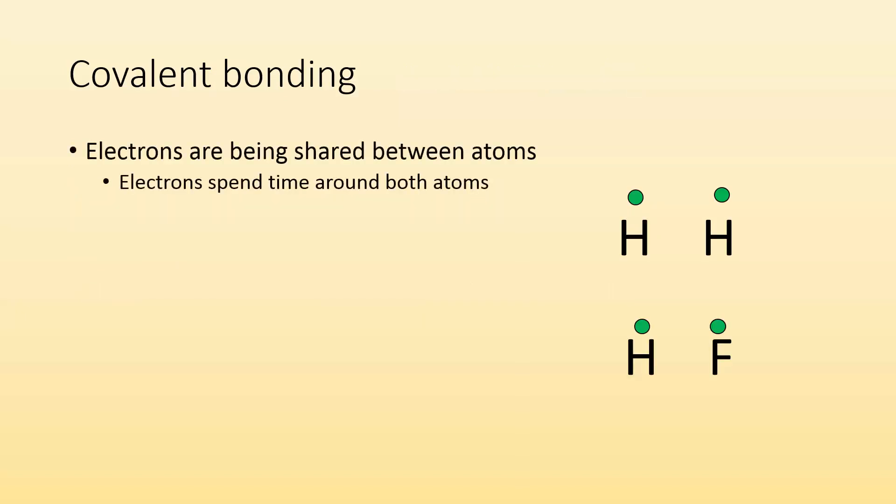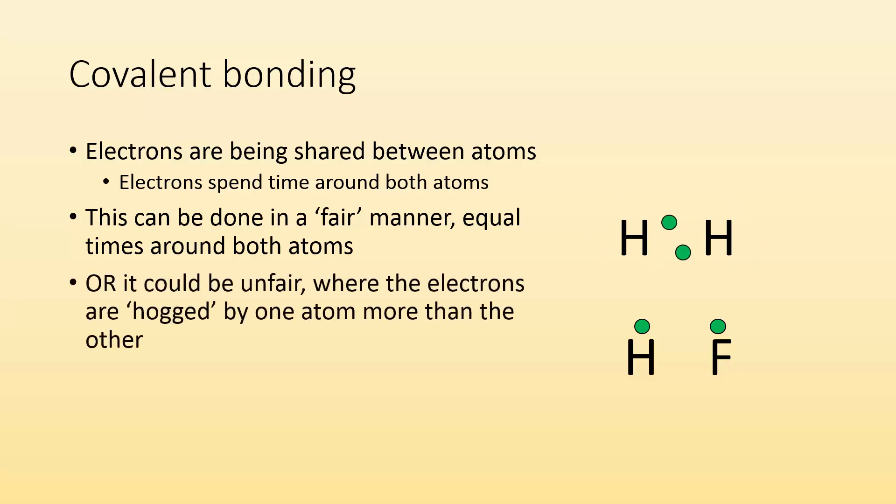Covalent bonding - a little review. Covalent bonding is when electrons are being shared between two atoms. Electrons spend time around both of the atoms. This can be done in a fair manner where they spend equal time around both atoms. Like in this moving example, you can see the electrons are moving and spending approximately the same amount of time around each hydrogen atom. Or the sharing could be unfair where electrons are hogged by one atom more than the other. Here is an example where fluorine is hogging those electrons. They're supposed to be sharing both electrons, but they're spending more time around the fluorine than the hydrogen.